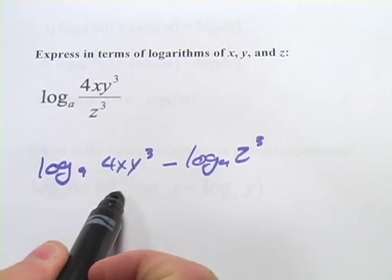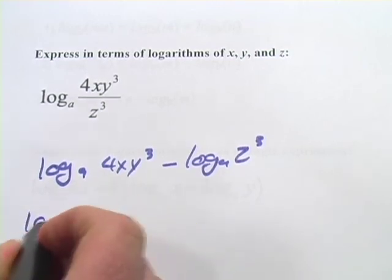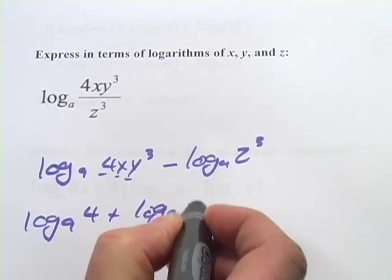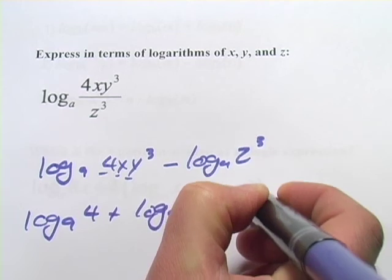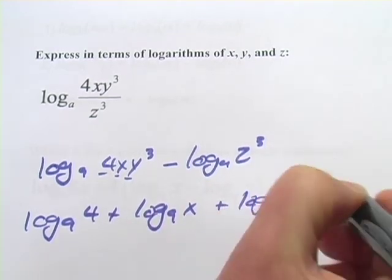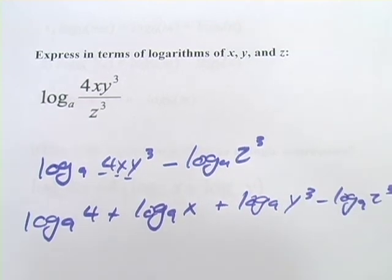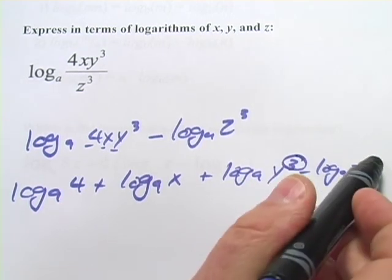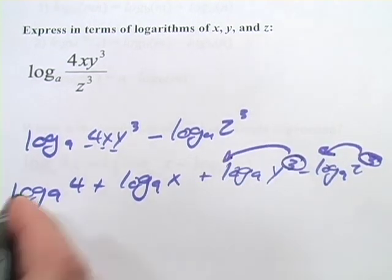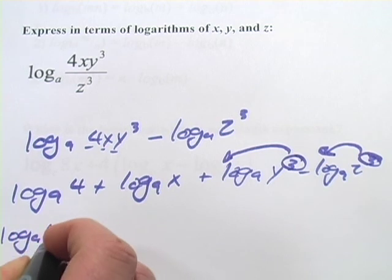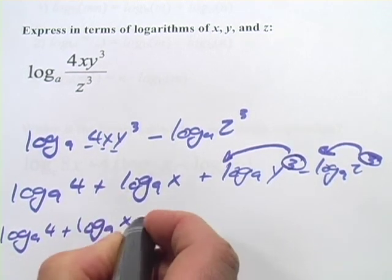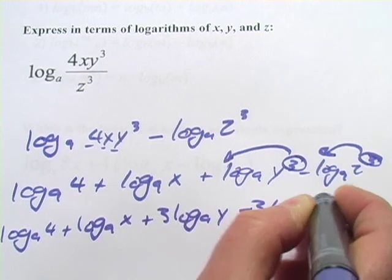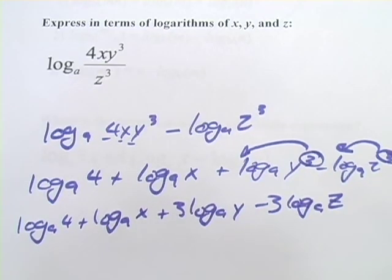Inside the first log we've got multiplication, so we can separate that out and make it addition: log base a of 4 plus log base a of x plus log base a of y to the third, and then we still have minus log base a of z to the third. Now the only thing left is to take these exponents and put them out front with multiplication. This ends up being log base a of 4 plus log base a of x plus 3 log base a of y minus 3 log base a of z. And that's a little bit about dealing with the properties of logarithms.